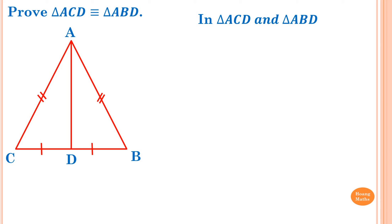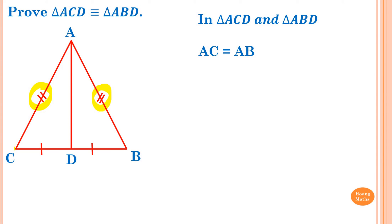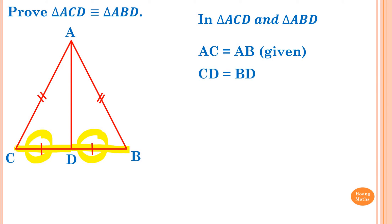Step two: write down all the facts given in the diagram. AC is equal to AB — reason: given, because the tick symbols show the two sides are equal. CD is equal to BD — reason: given, because the symbols show both sides are equal.